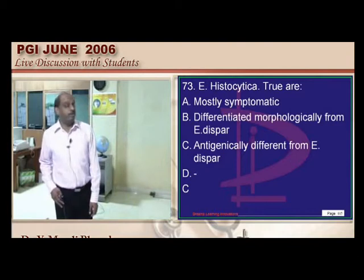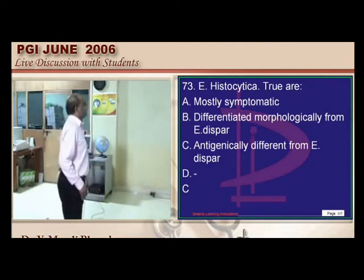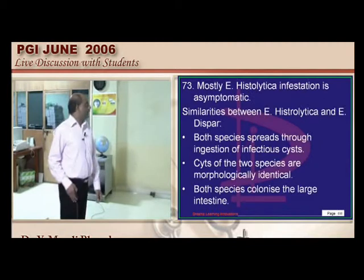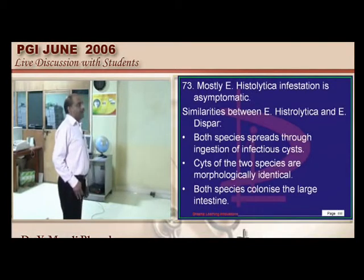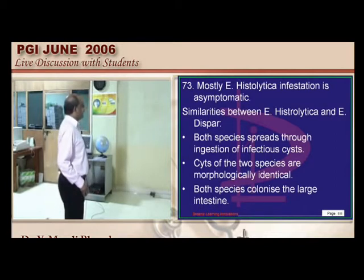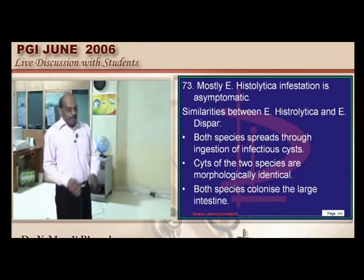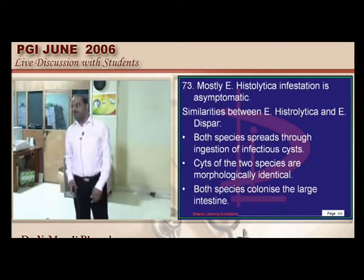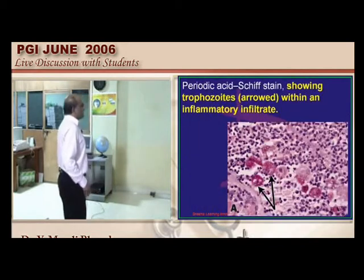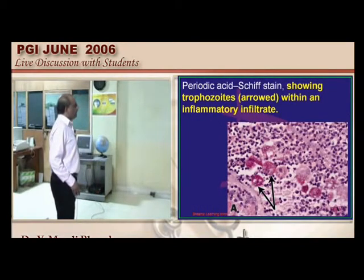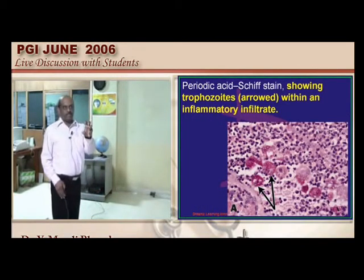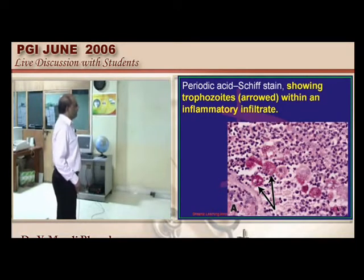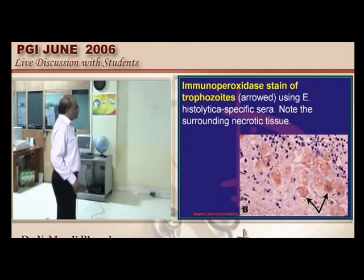Entamoeba has many cousins, most of which are non-pathogenic. Entamoeba dispar looks very similar morphologically to Entamoeba histolytica and can only be differentiated by immunological methods. The PAS stain shows the tetranucleate cysts of E. histolytica, and immunoperoxidase stain can be used for trophozoite recognition.